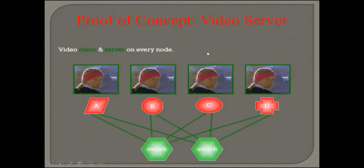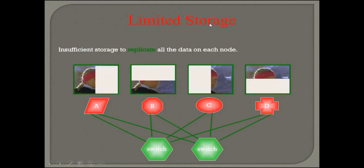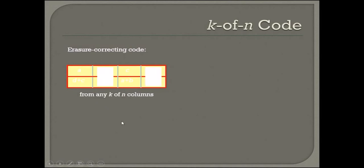We have video server and video client on every node. We have limited storage, insufficient to store or replicate all the data on each node. We have k of n nodes, but this is not available. This is where we are lacking.